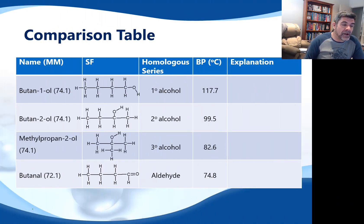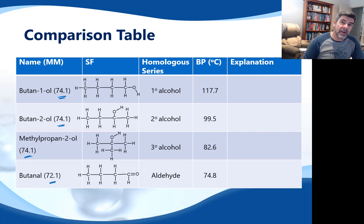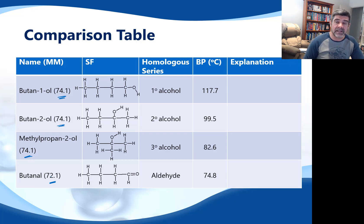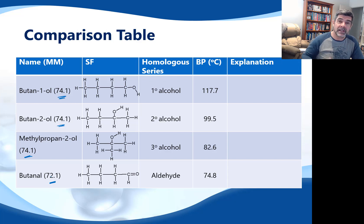The first group we want to look at are the alcohols and the alkanals — the primary, secondary and tertiary alcohols and an aldehyde. I've given a number of examples of each where the molar mass is pretty similar. When comparing substances in terms of structural formula and functional group, we need to remove some variables. One very important variable is mass and what happens as the chain length increases.